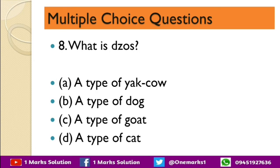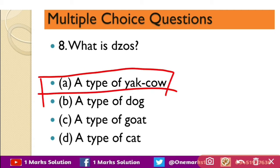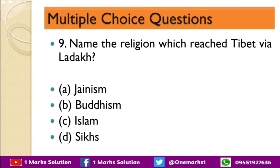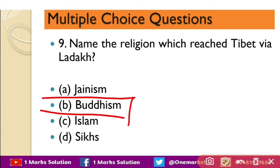Next question: what is a Dzo? The options are a type of yak-cow, a type of dog, a type of goat, or a type of cat. The correct option is a type of yak-cow. Next question: name the religion which reached Tibet via Ladakh. The options are Jainism, Buddhism, Islam, and Sikhism. The correct option is Buddhism.